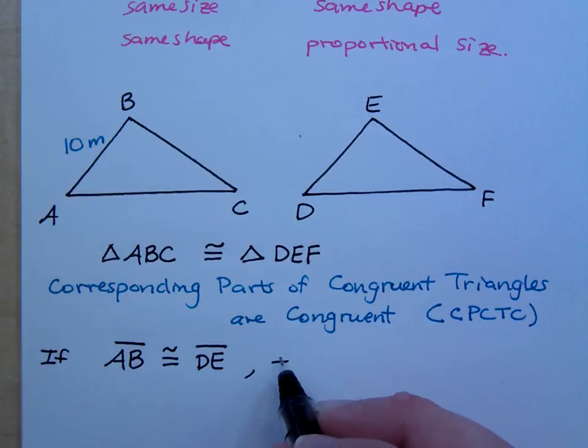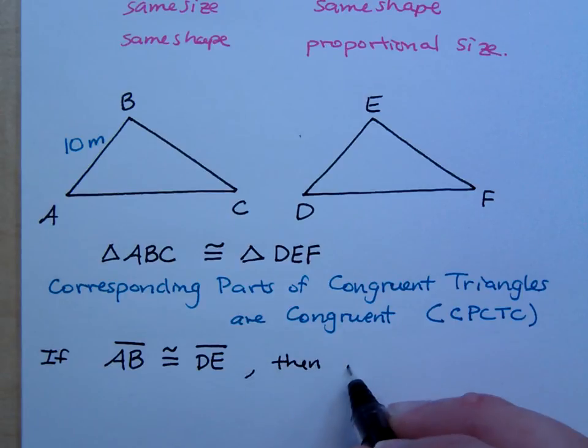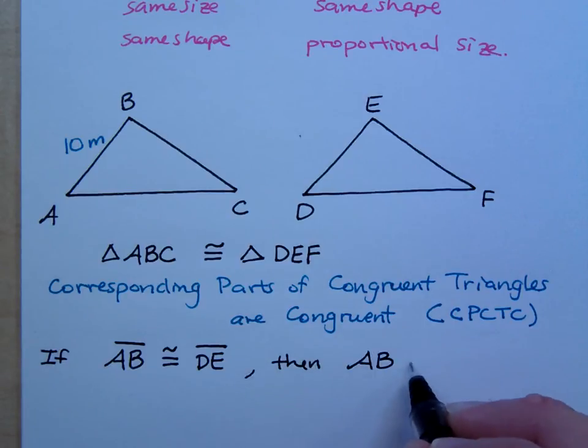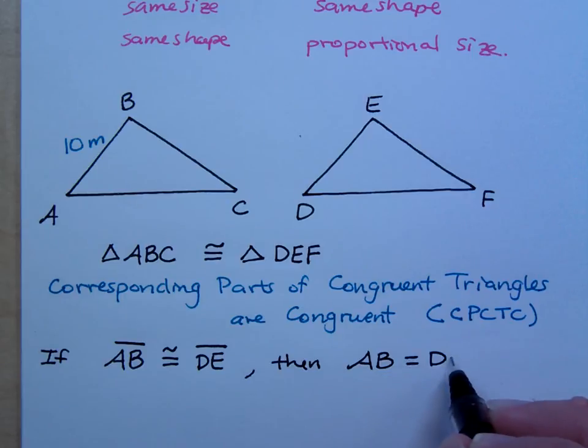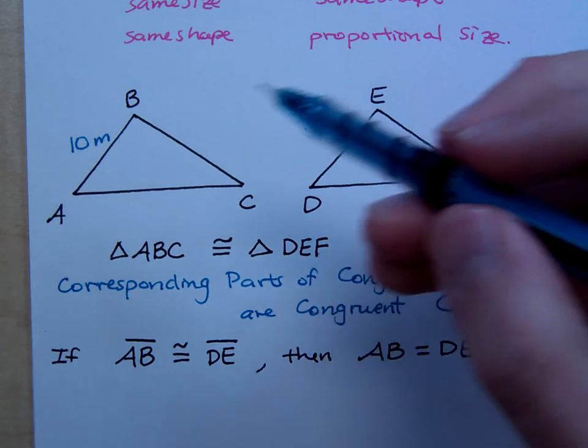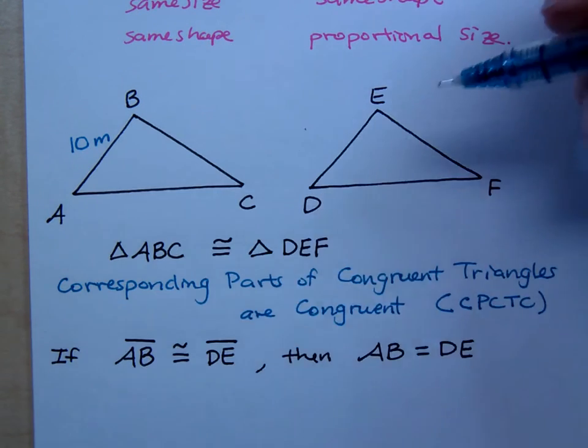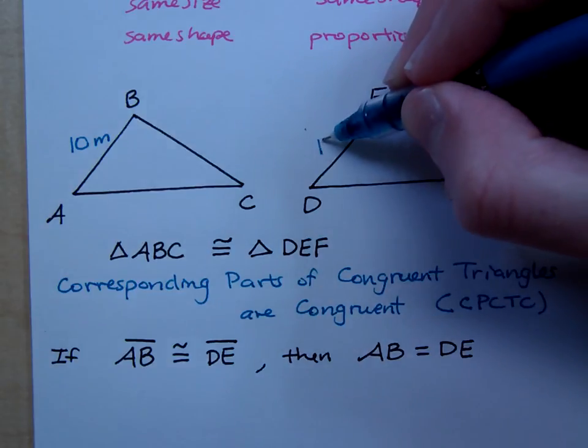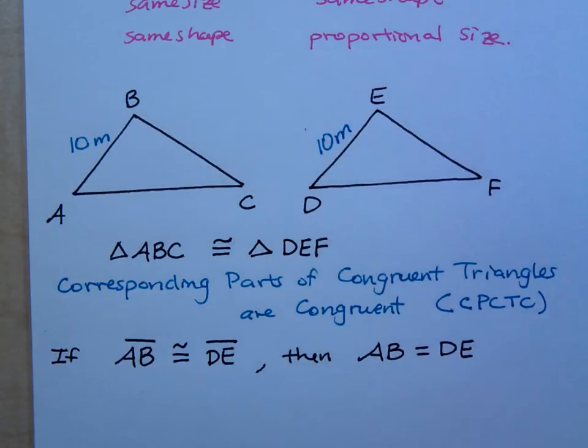So, if you have this. If these guys are congruent, then we would say this, that AB equals DE. Without that bar across the top of it, that means you're talking about the actual length of this. So, if line segment AB measures 10 meters, what do you know about line segment DE? It also measures 10 meters, right?